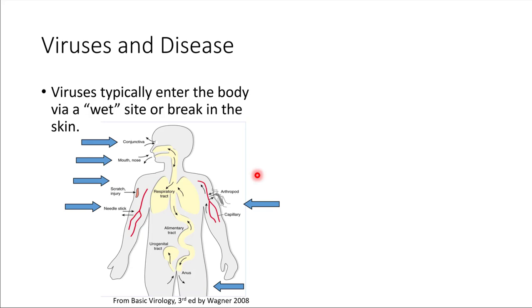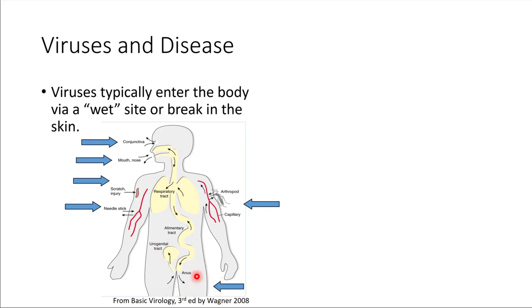Sites in the body where viruses can enter: the head is an area where cold viruses tend to gain entry — the nose, mouth, and eyes are all wet sites. There are also other places: if you have a scratch or some sort of injury, that exposes wet surfaces and is a potential site of infection. Needles can carry things directly into the bloodstream from outside, and that's how some diseases can be transmitted through needle use. Some arthropods and insects can transmit diseases this way too. Some diseases can be transmitted through mosquitoes, just by getting a mosquito bite.